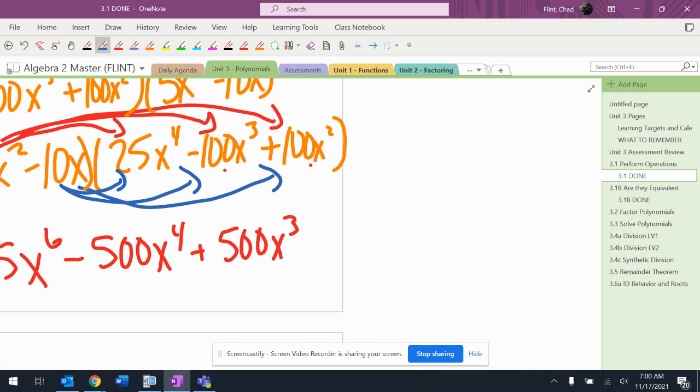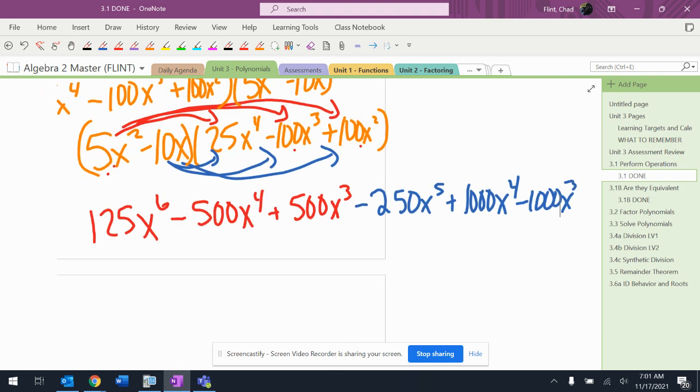Slide this over a little bit. Negative 10x times 25x to the fourth is negative 250x to the fifth. Negative 10x times negative 100x to the third is positive 1,000x to the fourth. Negative 10x times 100x squared is negative 1,000x to the third. All right, so we've got it all squeezed in there.